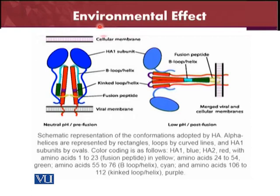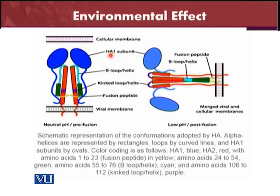To explain: first there is the cellular membrane, then the virus. At neutral pH there is the pre-fusion state, which is the normal state of the virus. After the pH has been lowered, post-fusion occurs. After post-fusion at low pH, the virus merges its membrane with the cellular membrane. This involves the HA subunit, hemagglutination, and the B-loop. These are the normal virus constituents from which the virus is made.